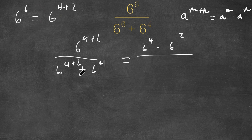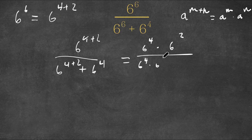And I'm going to do the same thing with the 6 to the power of 4 plus 2 in our denominator. So we'll have 6 to the power of 4 times 6 squared, and then we have a plus 6 to the power of 4.